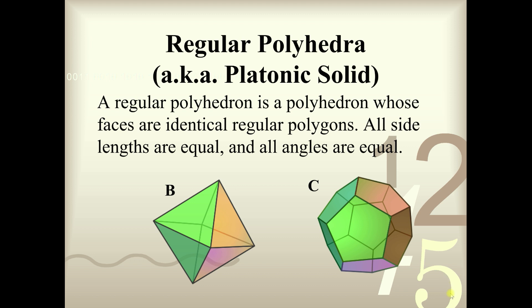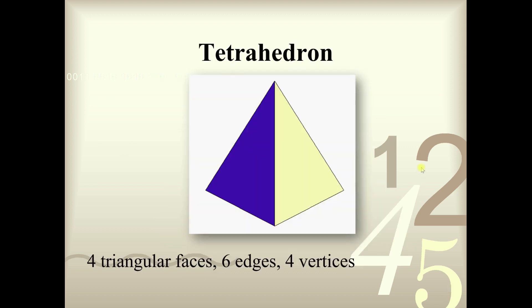So without any further ado, let's get into the first regular polyhedron — the first platonic solid. It is called a tetrahedron. The word tetra comes from Greek, meaning four, because a regular tetrahedron consists of four triangular faces, six edges, and four vertices.